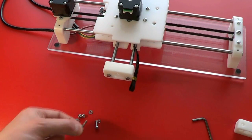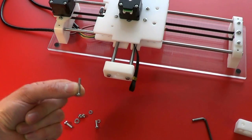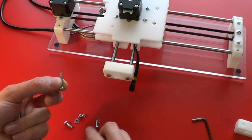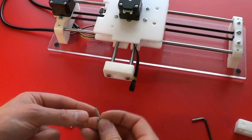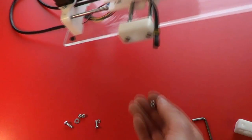Take the long M3 screw, it's a 20mm long one, and an M3 washer. Turn the machine over.